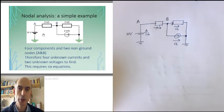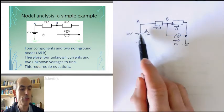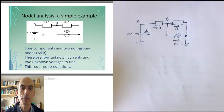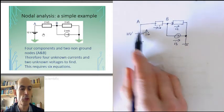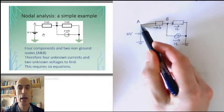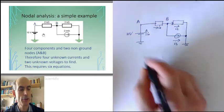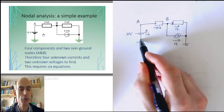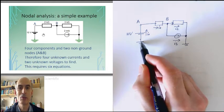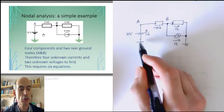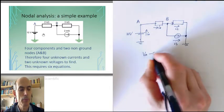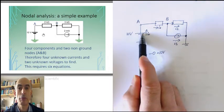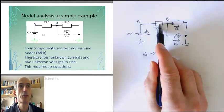Right, first thing I do is I write the four equations, one for each of these components, based on the behavior of that component. This 10 volt voltage source here is maintaining the voltage at node A, which I'll refer to as VA, as 10 volts above the voltage on the other side of the voltage source, which is connected to ground, and is therefore at zero. So I could just write that VA minus zero is 10 volts. And that's the equation describing the behavior of the voltage source.